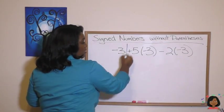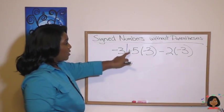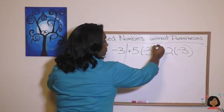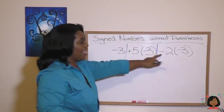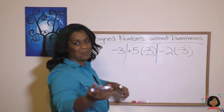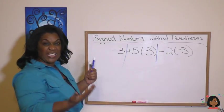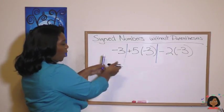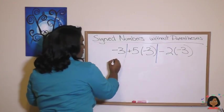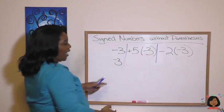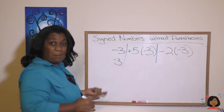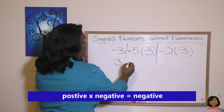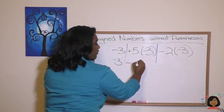So we're going to say negative three is one term. Then our positive five times our negative three is going to be another. And then our negative two times a negative three is going to be our third term. Let's work each of these and then we'll work it from left to right. So for now, I'm just going to keep my negative three. And now we've got a positive five times a negative three. A positive times a negative is a negative. So that's going to be minus 15.